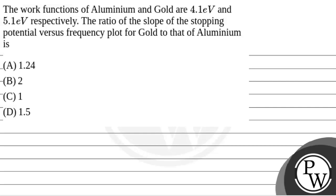Hello. Let's read the question. The question says that the work functions of aluminum and gold are 4.1 electron volt and 5.1 electron volt respectively.